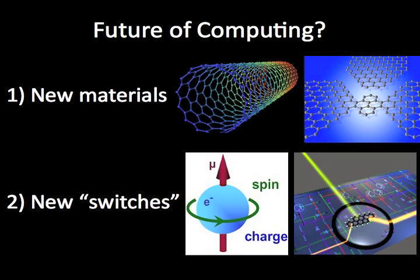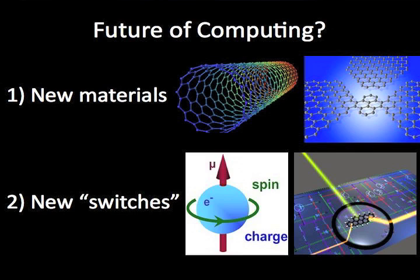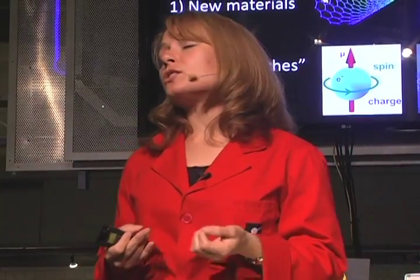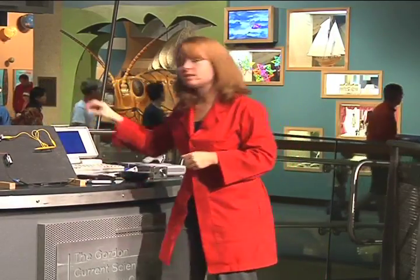They think we have two options, two technologies that will take us into the future. The first one is new materials — are there new materials instead of silicon that could solve some of our heat and size issues? And the second solution is new switches: totally new ways our computers could represent ones and zeros of computing language instead of electrical switches. Let's explore some of these new materials first.